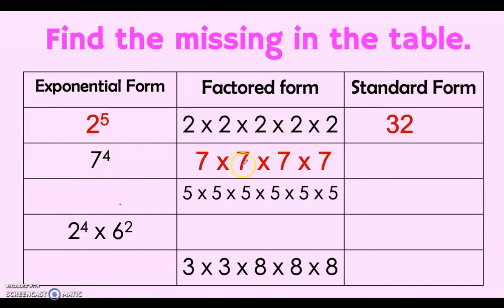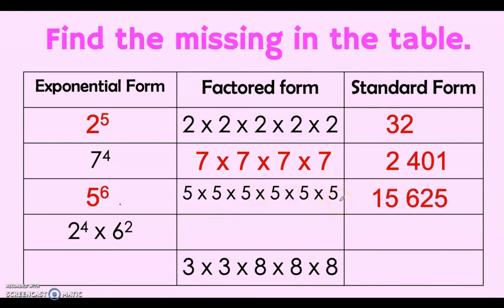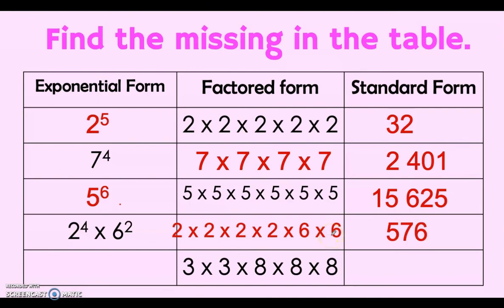For 7 to the power of 4, multiply 7 four times and the standard form is 2401. Another example: the factored form changes to exponential form as 5 to the power of 6, because 5 is multiplied 6 times, and when we multiply this the answer is 15,625. Another exponential form: 2 to the power of 4 times 6 to the power of 2 expands to 2 times 2 times 2 times 2 times 6 times 6, giving 576. Finally, 3 times 3 times 8 times 8 times 8 is written as 3 to the power of 2 times 8 to the power of 3, and the standard form is 4608.